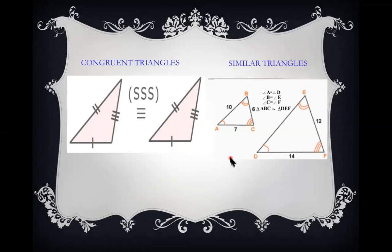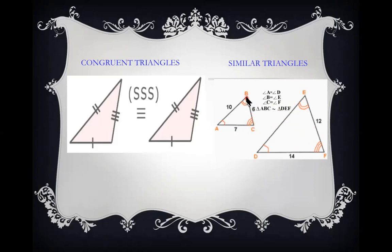Similar triangles: there is one major property — if each and every angle in one triangle corresponds and is equal to those in another triangle, the triangles are similar. For example, angle A = angle D, angle B = angle E, angle C = angle F. The sides are proportional but not equal; for instance, EF is 12 units while BC is 6 units.